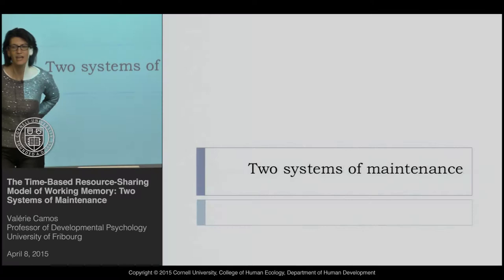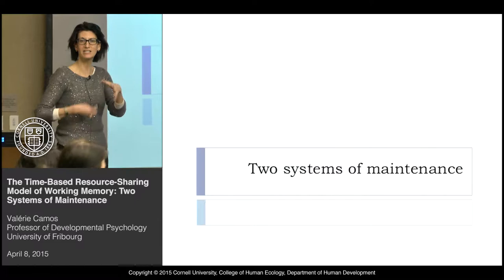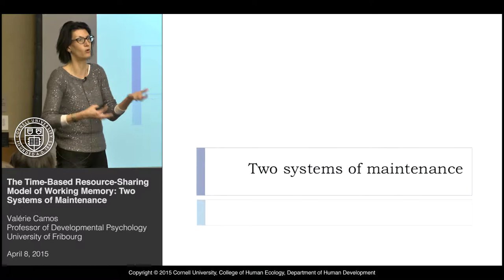Our idea is that for verbal material especially, we will have two mechanisms of maintenance, or two systems of maintenance. One will be a more attentional-demanding, domain-general mechanism that, because it's domain-general, could also be used for verbal material and domain-specific material.